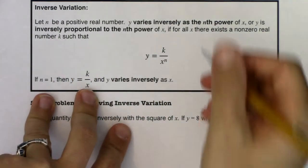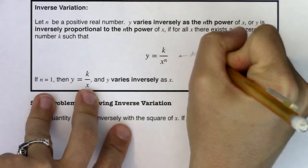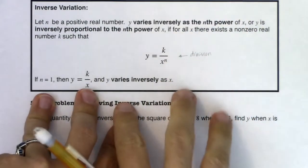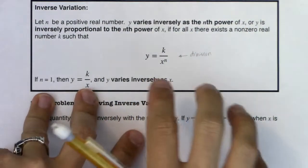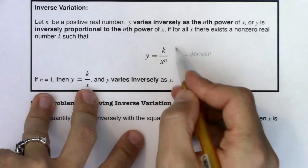And I want you to take note here that we have division on the right side of the equation, and that's in contrast to when we have direct variation where we would have k times x to the n.